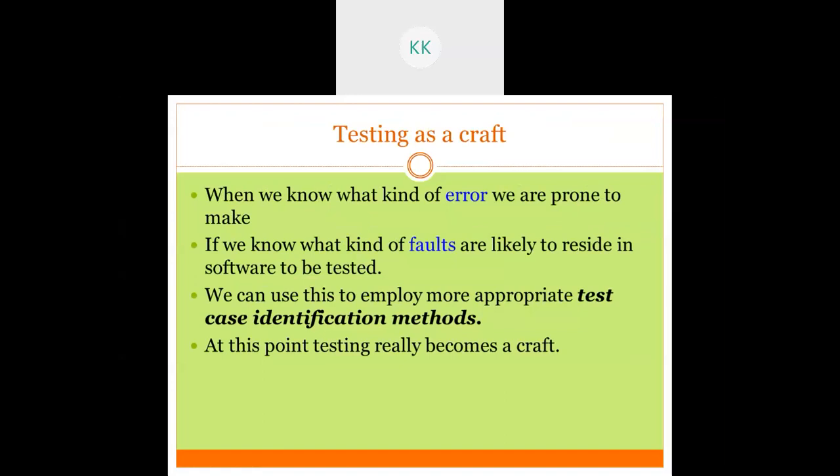When we know what kind of error we are looking for, we can more easily identify that particular error. If we know what kinds of faults are likely to occur in the software being tested, we can identify them easily and use a more appropriate test case identification method. Experienced testers who know the software well are able to identify the likely types of errors more effectively.